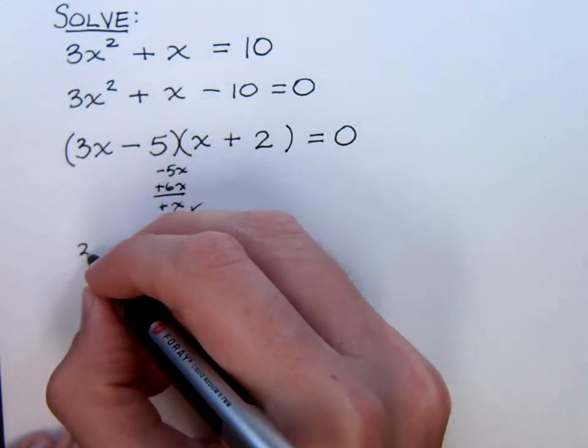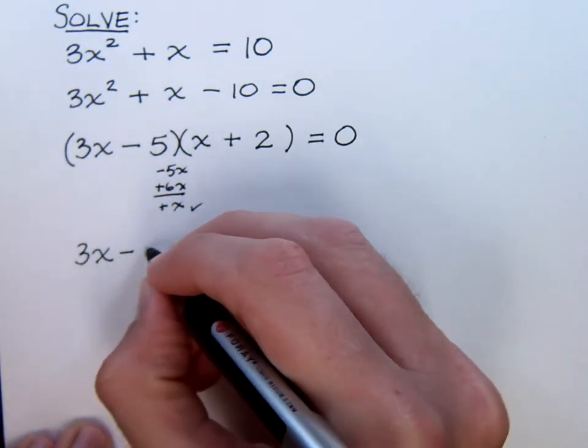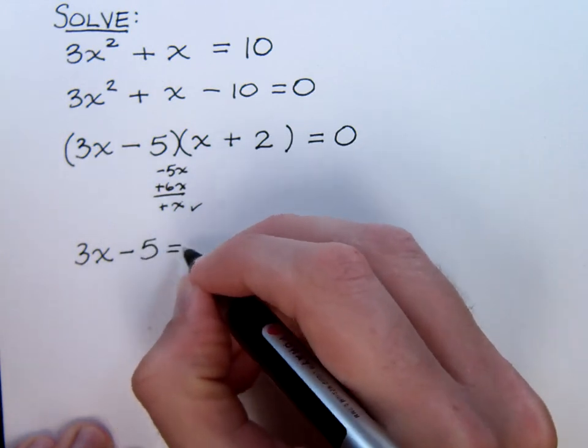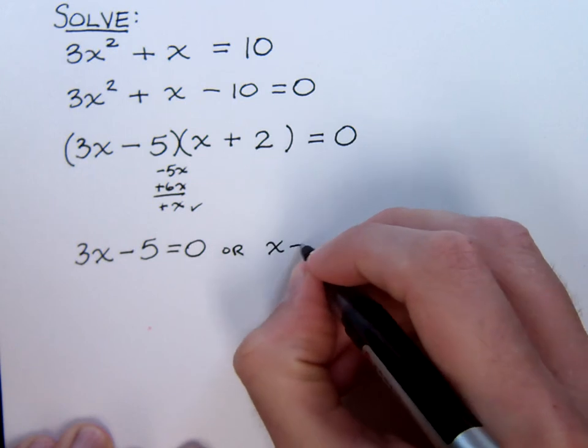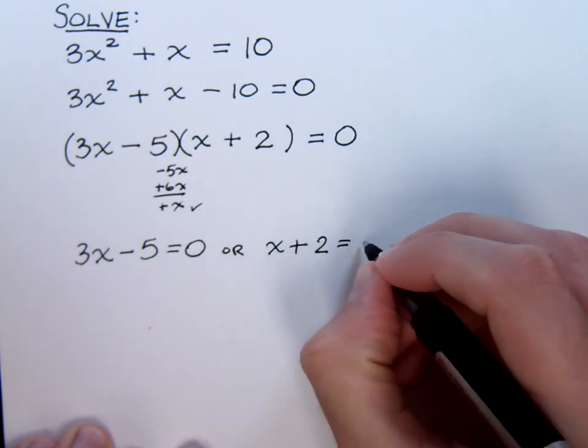Okay, the rest of this is using that zero factor theorem. 3x minus 5 is equal to zero. Or, x plus 2 is equal to zero.